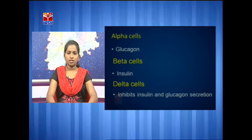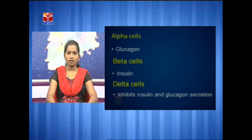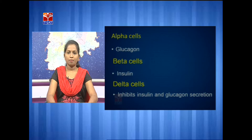Due to the deficiency of insulin, diabetes mellitus is seen. Diabetes mellitus occurs due to the destruction of the islets of Langerhans, causing insulin deficiency. Diabetes mellitus is of two types — type 1 and type 2. In type 1, it can be treated by taking insulin injections; in type 2, it can be treated by taking hypoglycemic drugs.